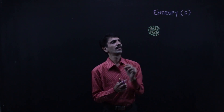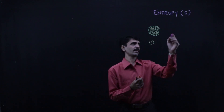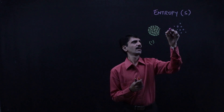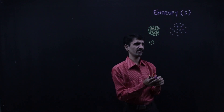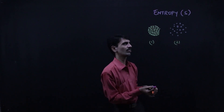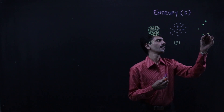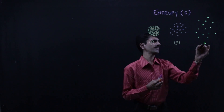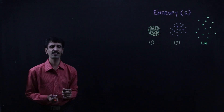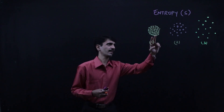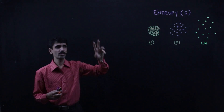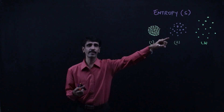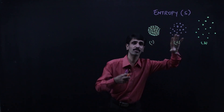Here are three different arrangements of particles with respect to each other in the available space. In arrangement number one, the particles are the closest to each other. Then they start going farther away as we go to number two, and in the third case, they go very far away from each other.